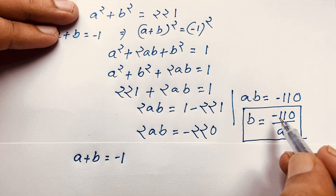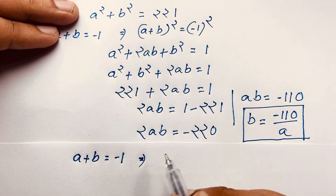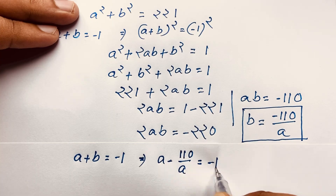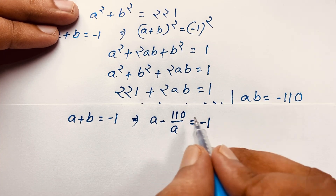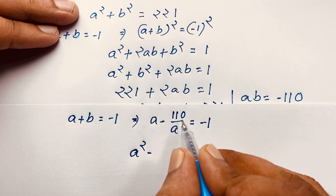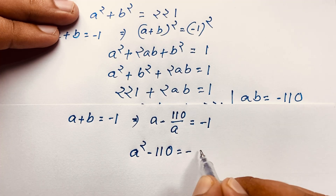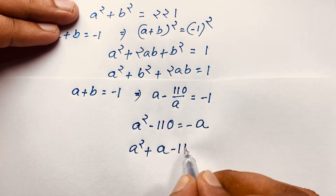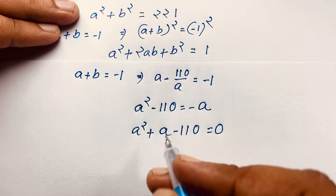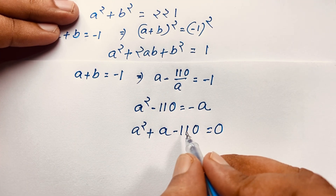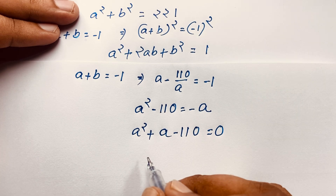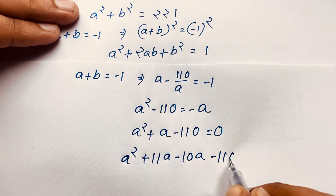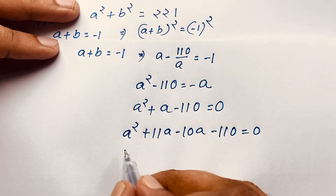Since b equals minus 110 over a, substituting into a plus b equals minus 1 gives: a minus 110 over a equals minus 1. Multiplying both sides by a gives a squared minus 110 equals minus a. Rearranging: a squared plus a minus 110 equals 0.